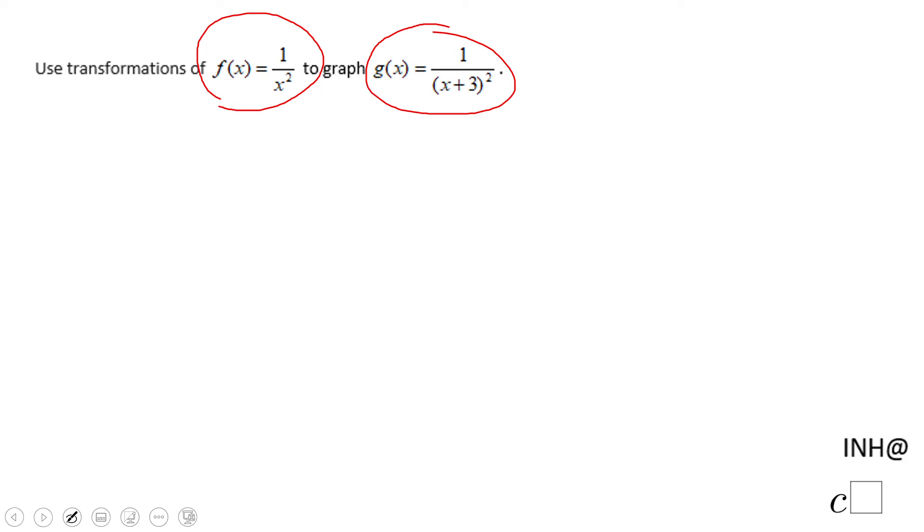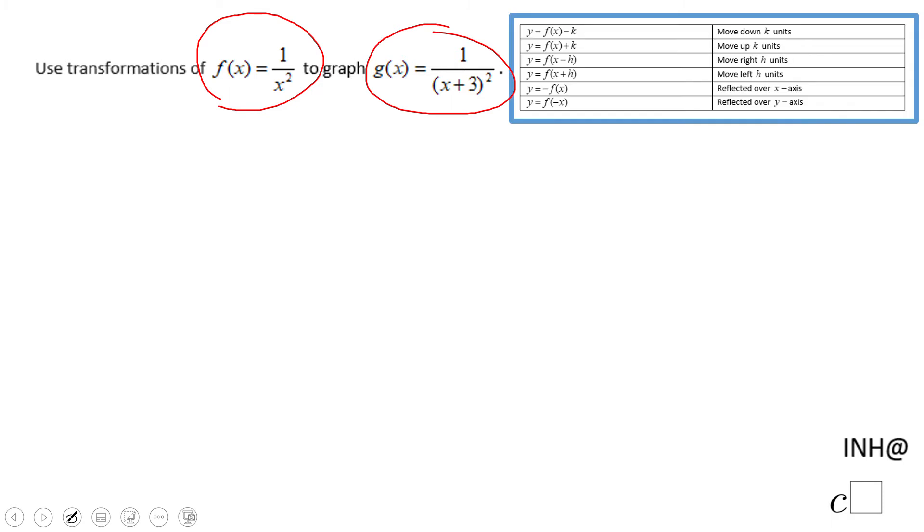We call the pattern graph f of x, which is one over x squared in its simplest form, and we ask ourselves how we can use one over x squared to graph one over x plus three squared. The answer is in this table.